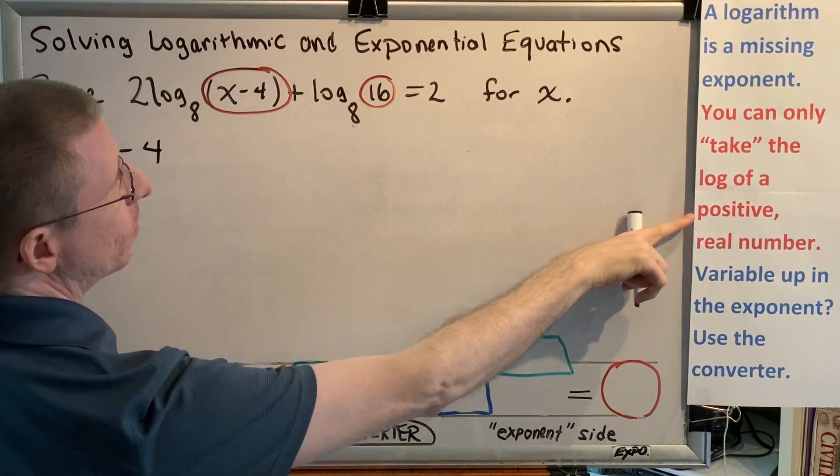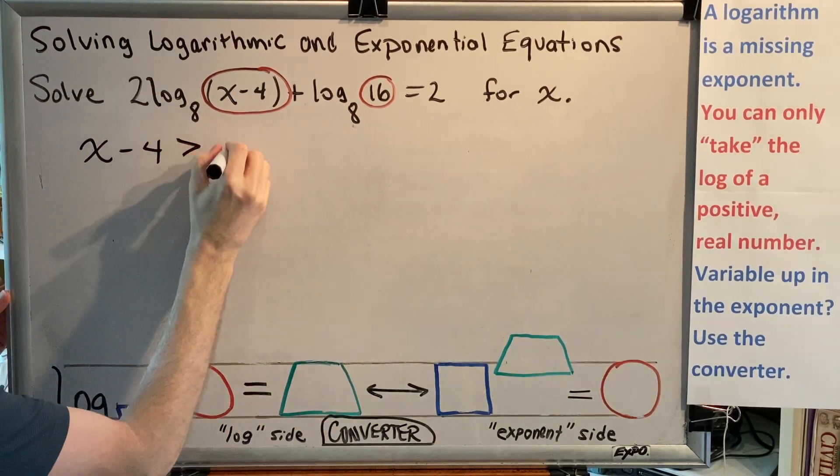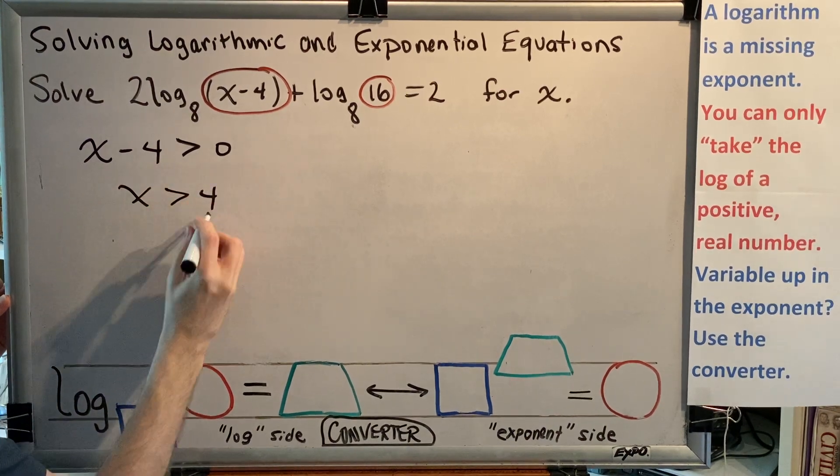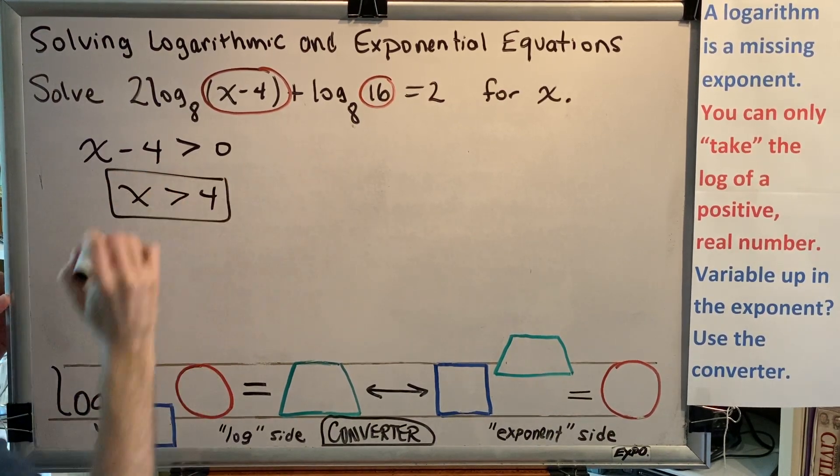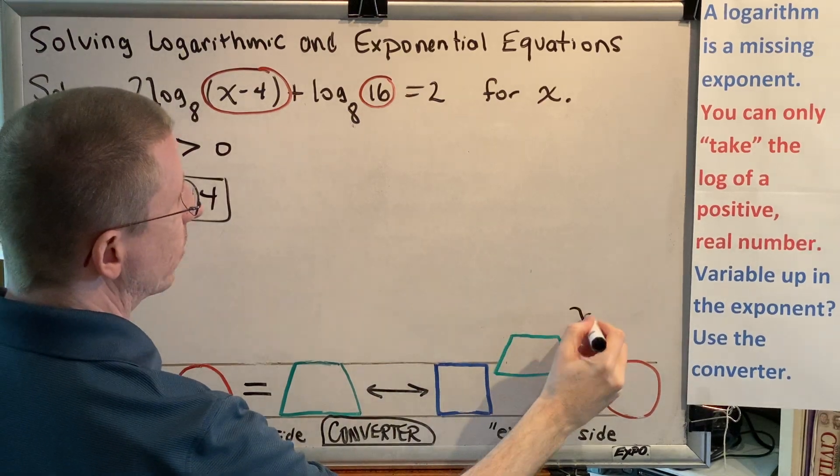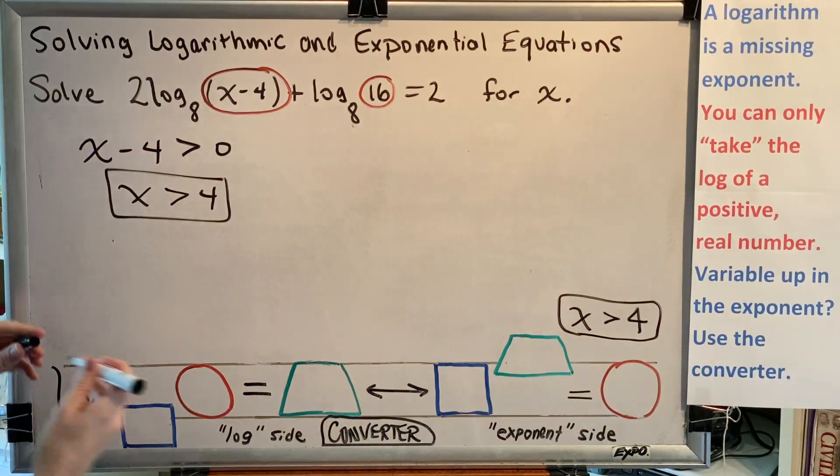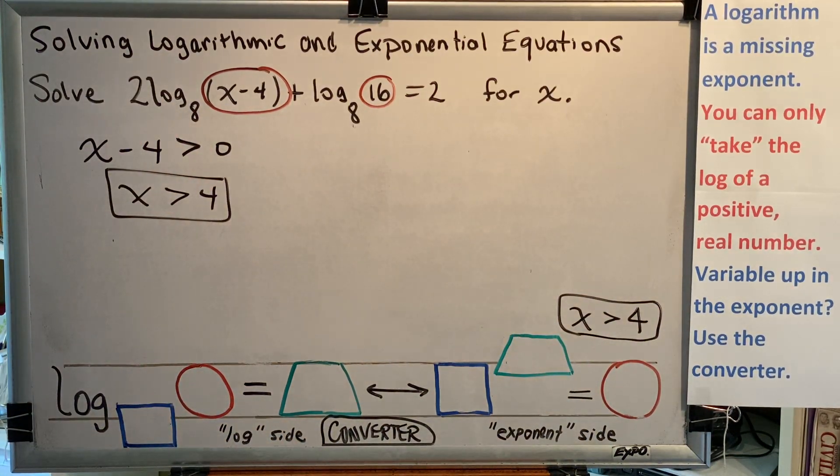has to be positive, in other words, greater than 0. And by adding 4 on both sides, we get x is greater than 4. So our domain for this problem is x is greater than 4. If we get any answers that are not greater than 4, we will throw them away as extraneous.